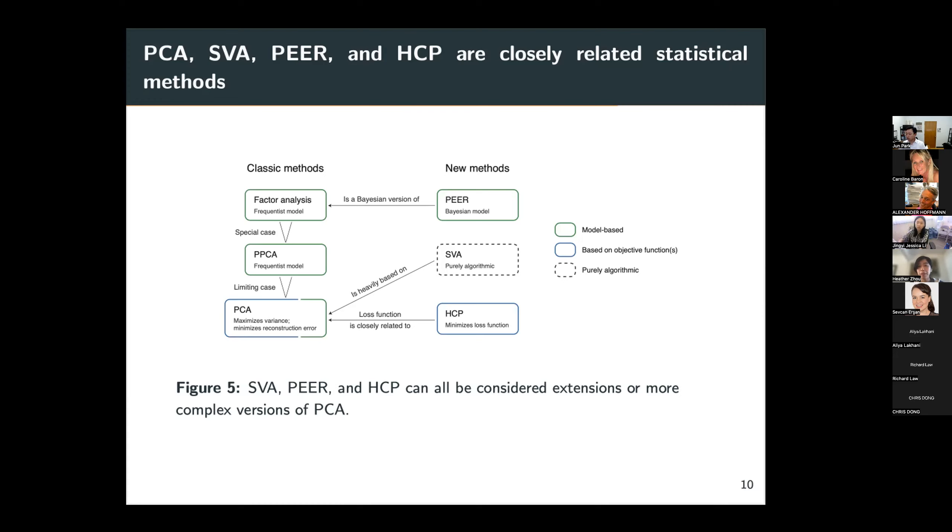So in particular, PEER can be considered a Bayesian version of factor analysis. So the connection between PEER and PCA is established. SVA is not based on a model or objective function. Instead, it's purely algorithmic, or we can say data analytic. And the algorithm is heavily based on PCA. It essentially reweights the columns, the features of the phenotype matrix, and then performs PCA.